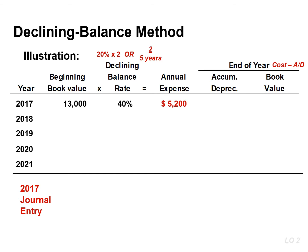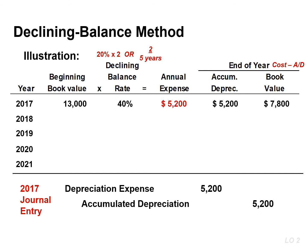Accumulated depreciation increases, and the book value decreases by this amount. The journal entry in year one results in a debit to depreciation expense for $5,200 and a credit to accumulated depreciation for the same amount.